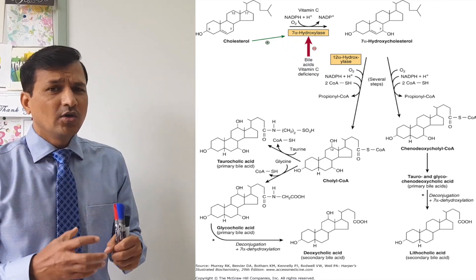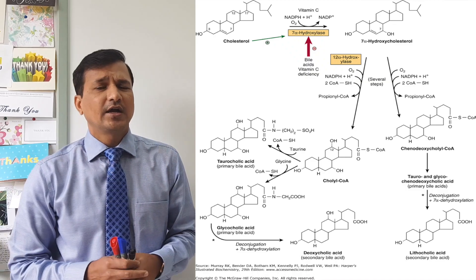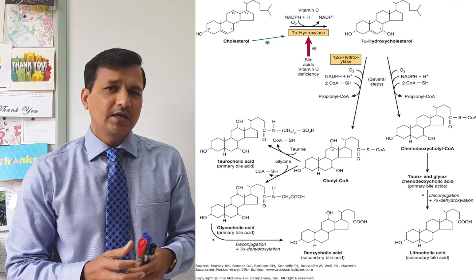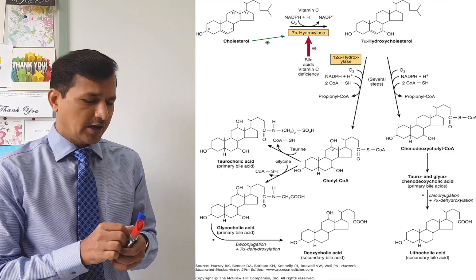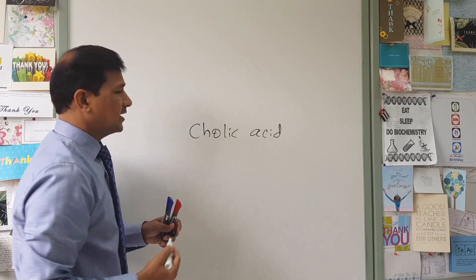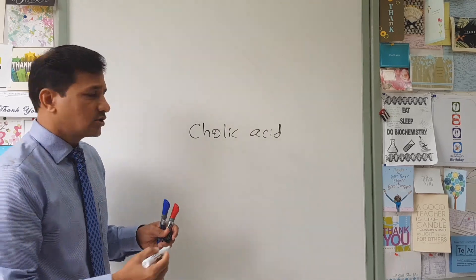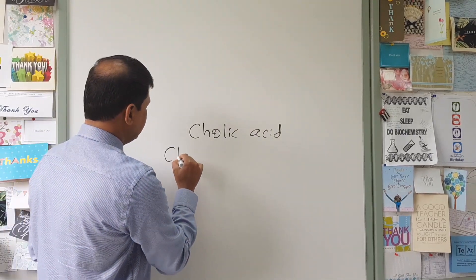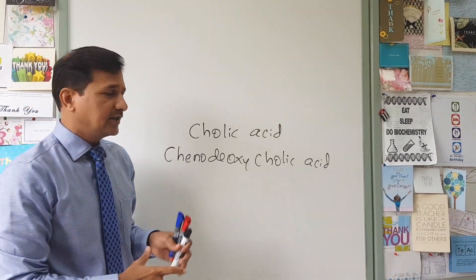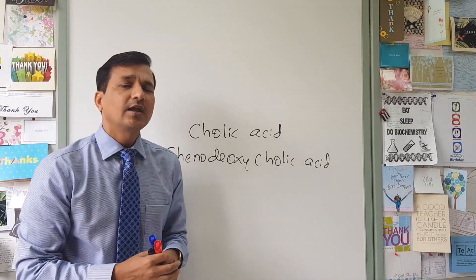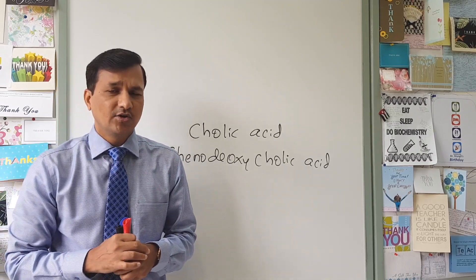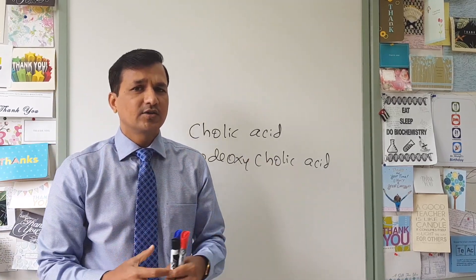What happens to Cholyl CoA and Chenodeoxycholyl CoA? If you remove CoA from Cholyl CoA, you get Cholic acid. Cholic acid and Chenodeoxycholic acid are two molecules that can be released by hepatocytes into the bile and from there into the duodenum.